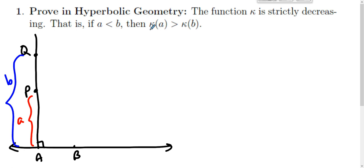We want to talk about kappa of a, that's the angle of parallelism for P and AB, and let's talk about kappa of b which is the angle of parallelism for Q and AB.